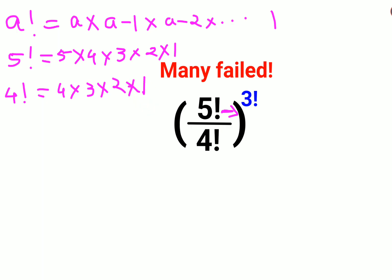Now, if you see clearly this entire thing gets repeated. So here I can say instead of 5 factorial, I can write this as 5 into 4 factorial.